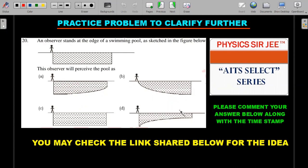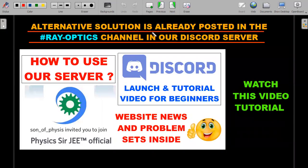It's about a person watching a swimming pool at oblique viewing at different points, and what this observer will perceive will cement my thought process about the previous question. Why the distance matters, why different points of the pool will look at different distances. Please comment your answer below along with the time stamp. I've shared a link of a depiction from UK website data, and an alternative solution was beautifully solved and posted by one of my students in the Discord server.